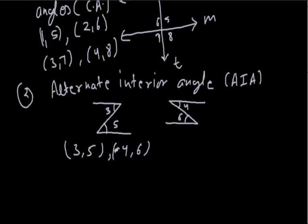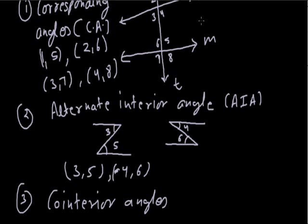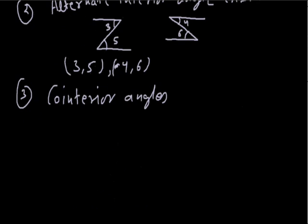The next type is co-interior angles. Co-interior angles are angles which are on the same side of the transversal and between the lines. For example, angles 4 and 5 are both on the same side of the transversal and between lines L and M, so they form a co-interior pair. Similarly, angles 3 and 6 also form co-interior angles.